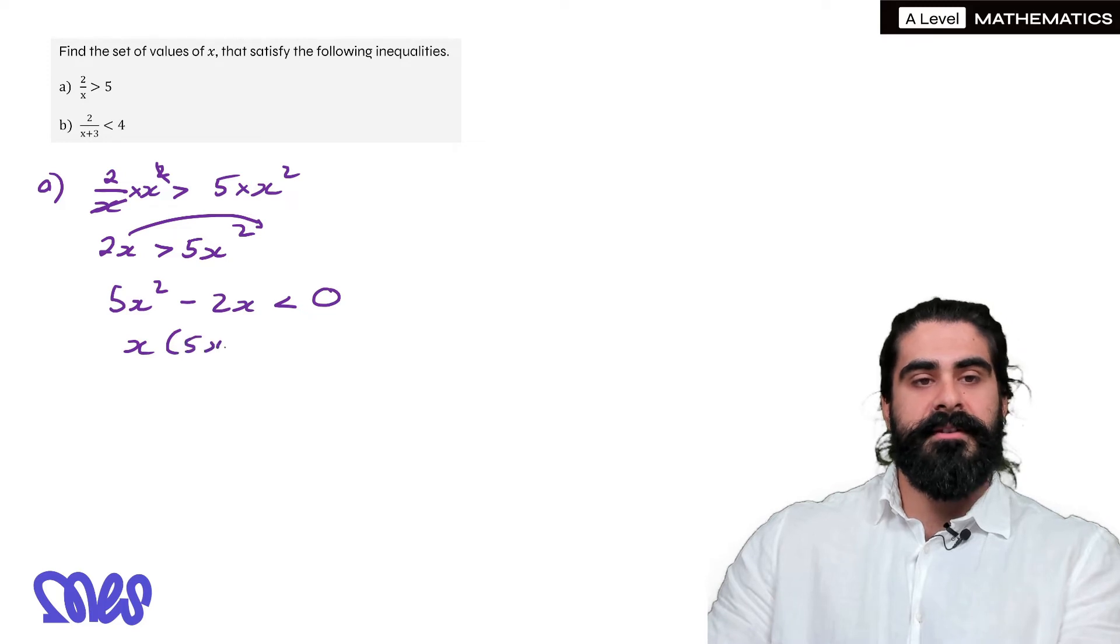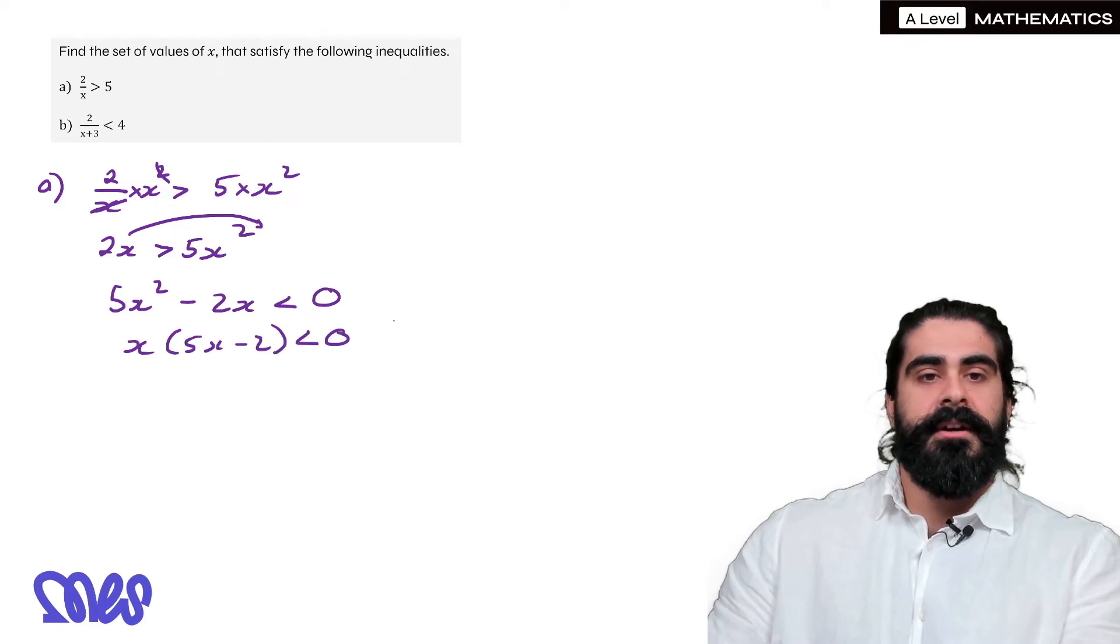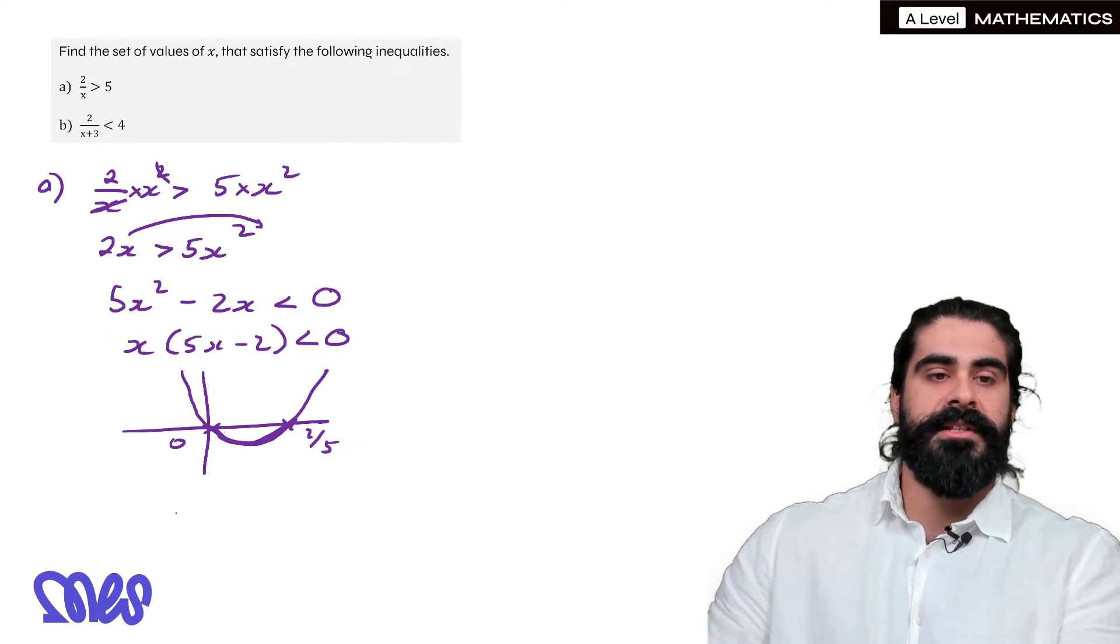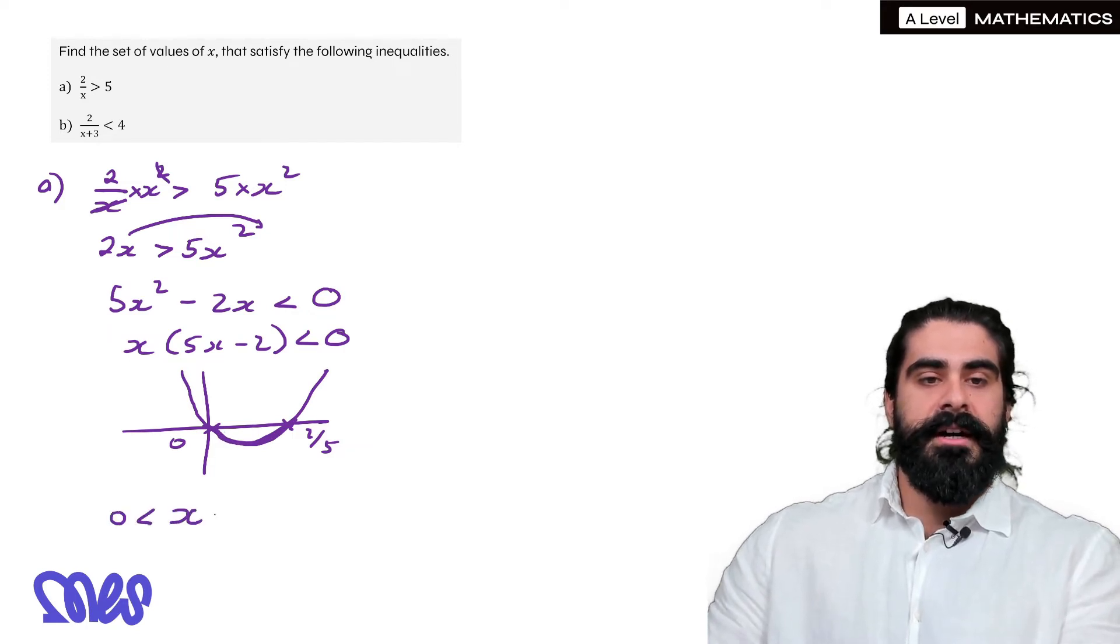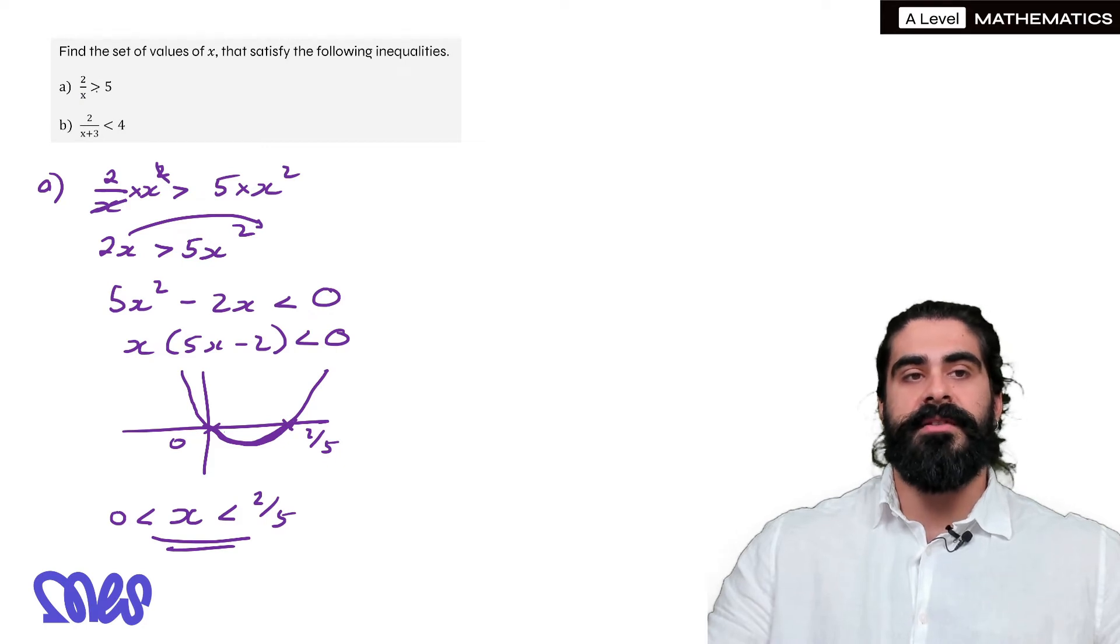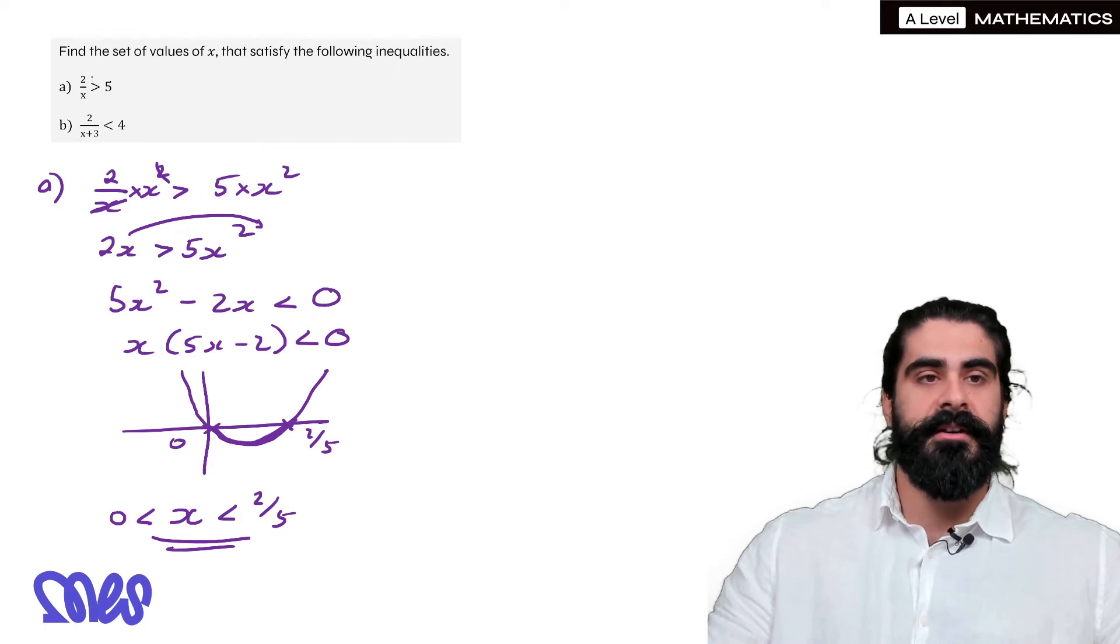Factorize, so we get x times 5x minus 2. For our solutions here, we'd have x is 0 and two-fifths. And same as last example, we're doing less than 0, so x can be anything between 0 and two-fifths. Keeping in mind that x is not allowed to be 0 and that's fine because it's a strict inequality here.